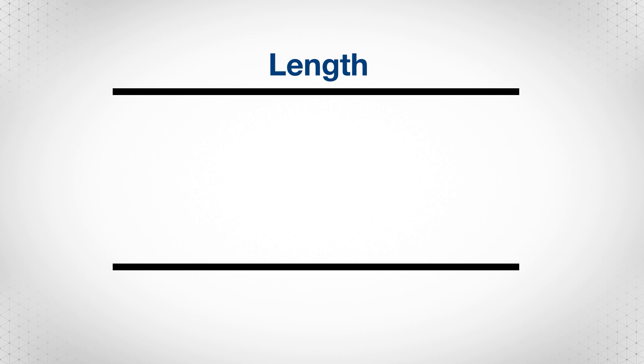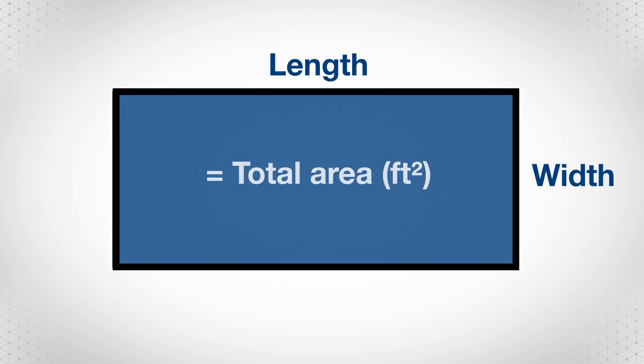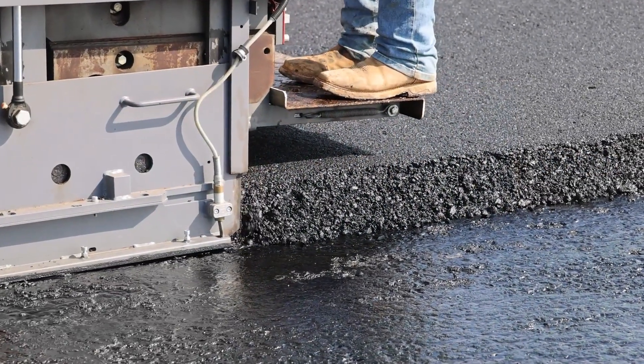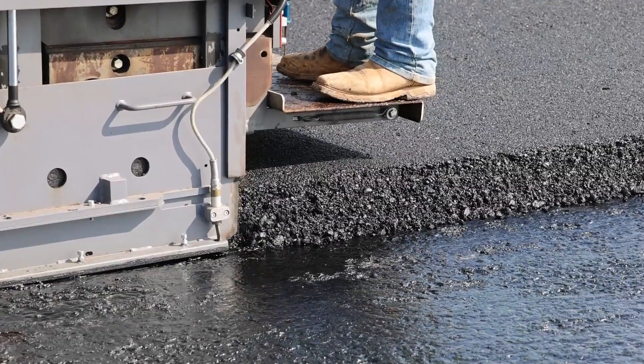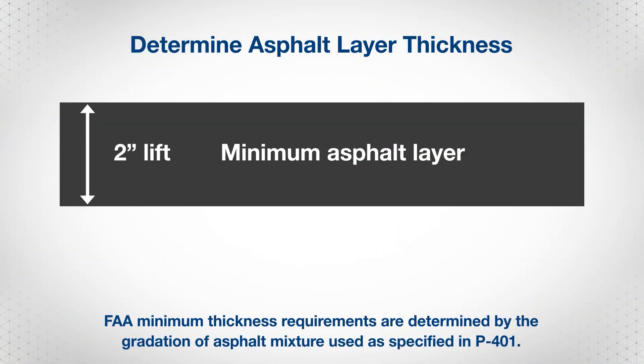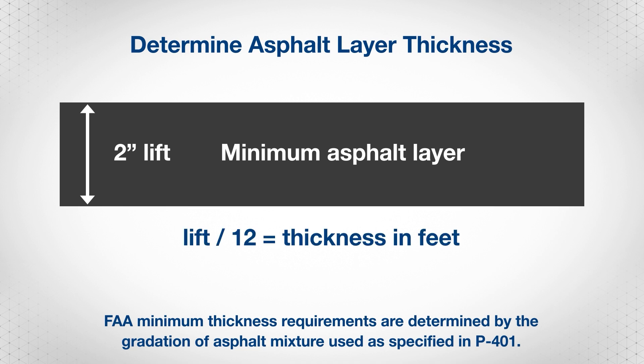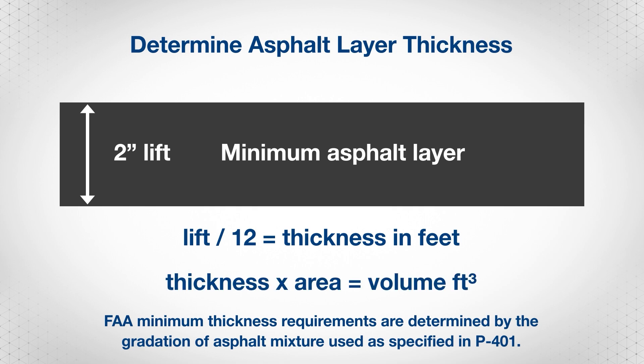Multiply the length by the width to get the total area in square feet. Determine the thickness of the asphalt layer — a two-inch lift is common for airfields depending on traffic and load requirements. Convert this thickness to feet by dividing by 12, then multiply the area by the thickness to get volume in cubic feet.